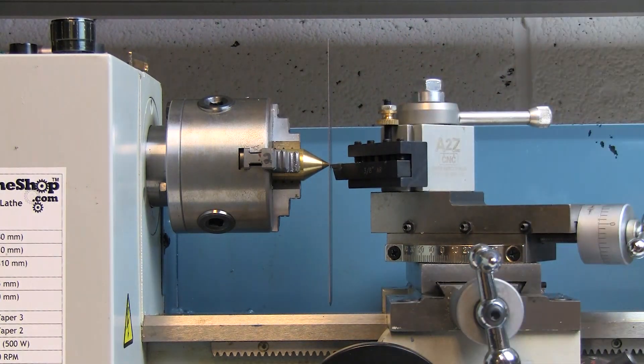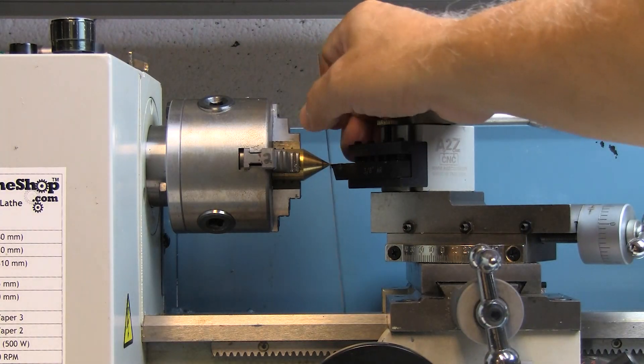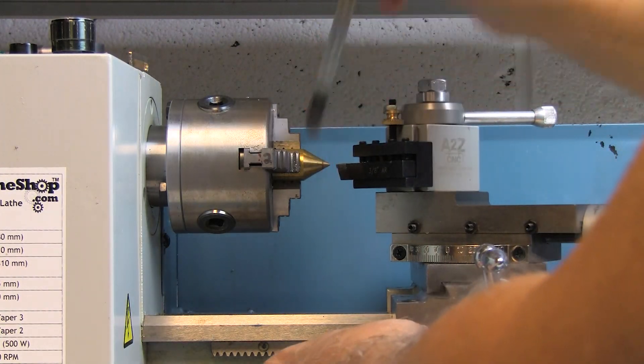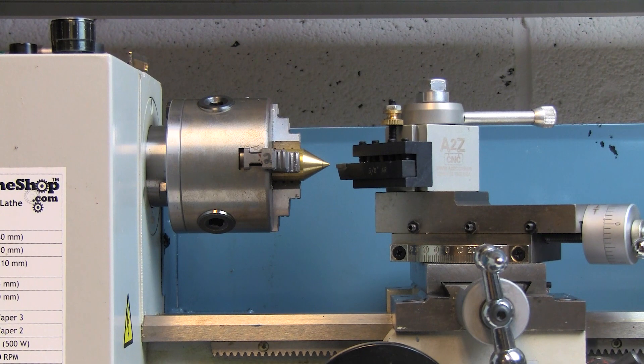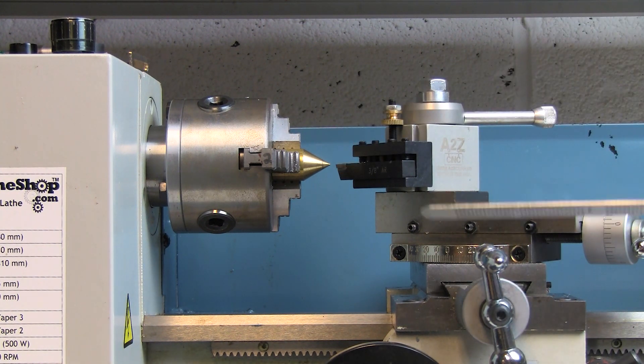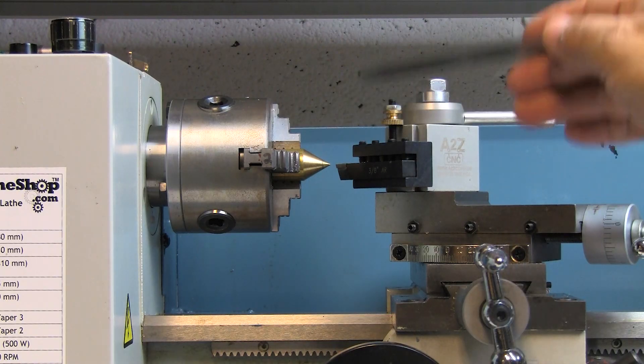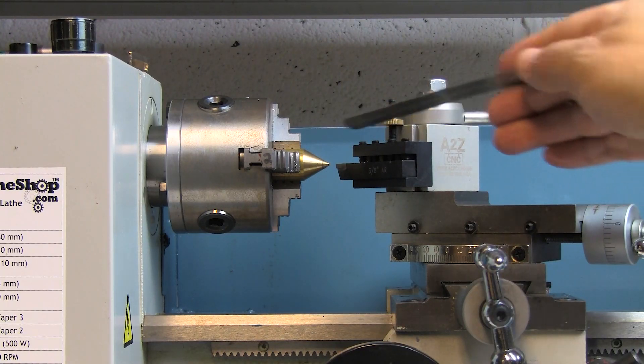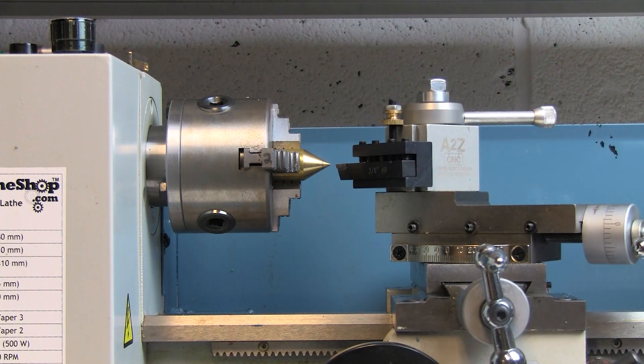And then we just lock it in position, and that's all there is to it. Now I can be assured that when I'm doing facing cuts across a piece of work, I will not end up with a dimple in the middle, which is the result of having your tool not set at the center point of the axis.